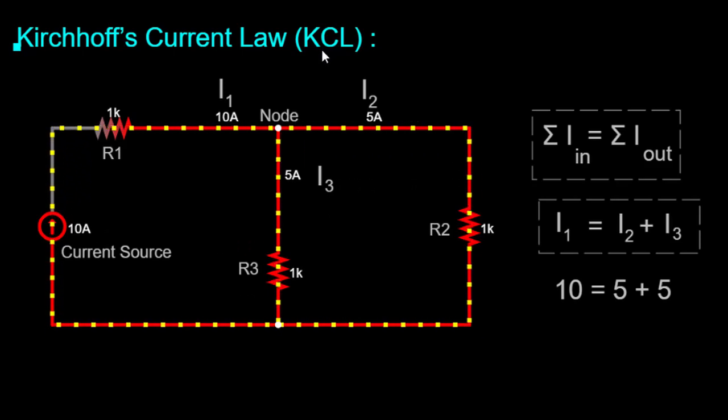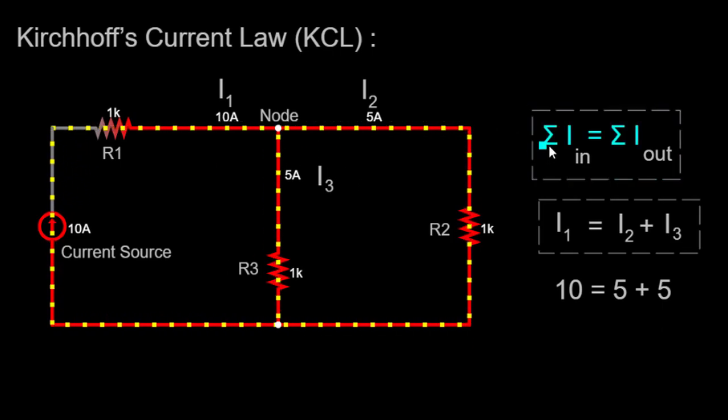It states that the algebraic sum of currents entering and exiting a node in an electrical circuit is always zero. In simpler terms, the total current flowing into a node is equal to the total current flowing out of that node.